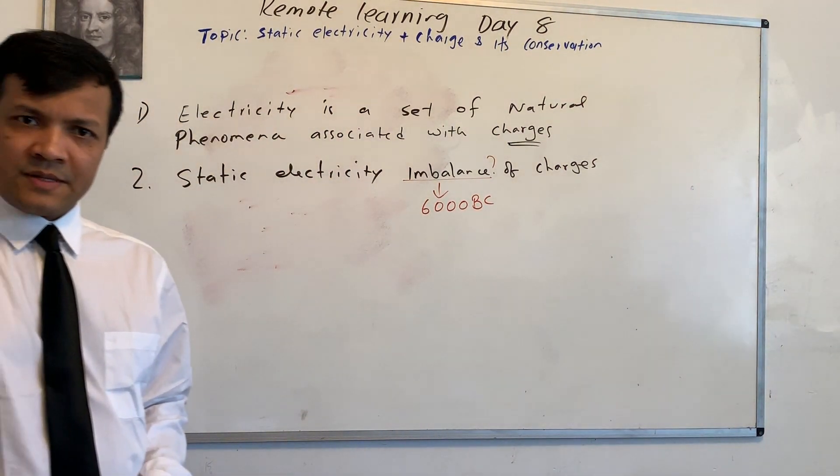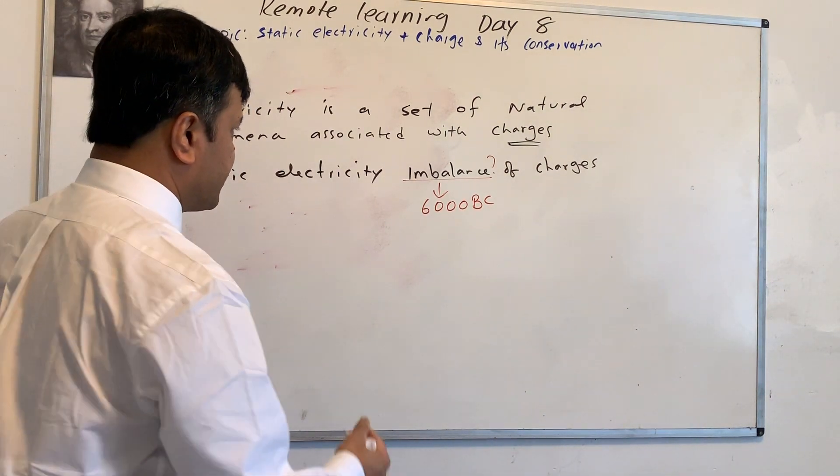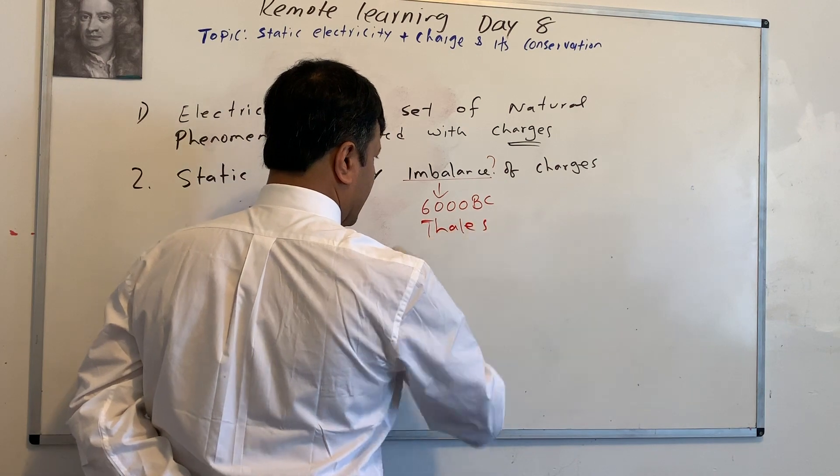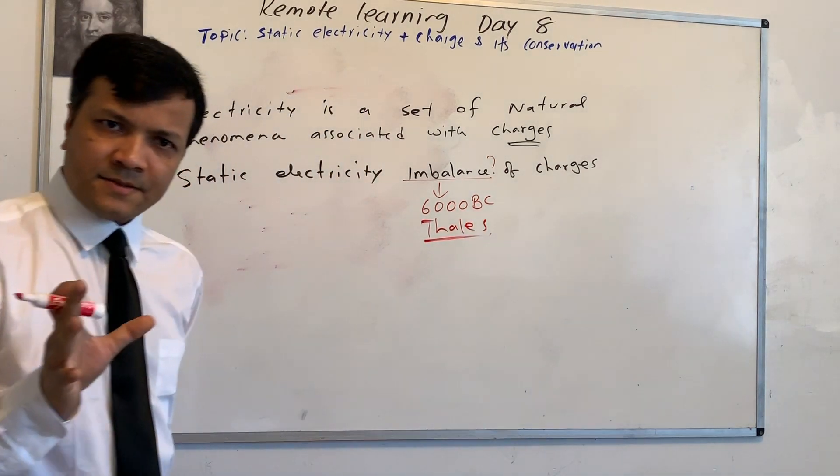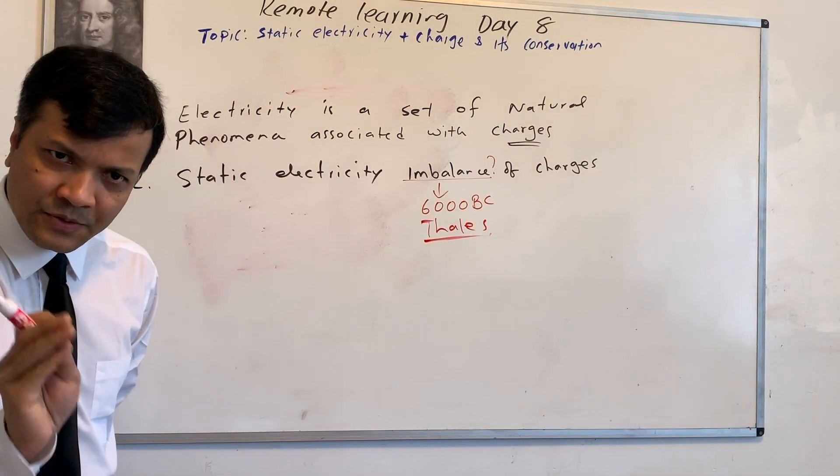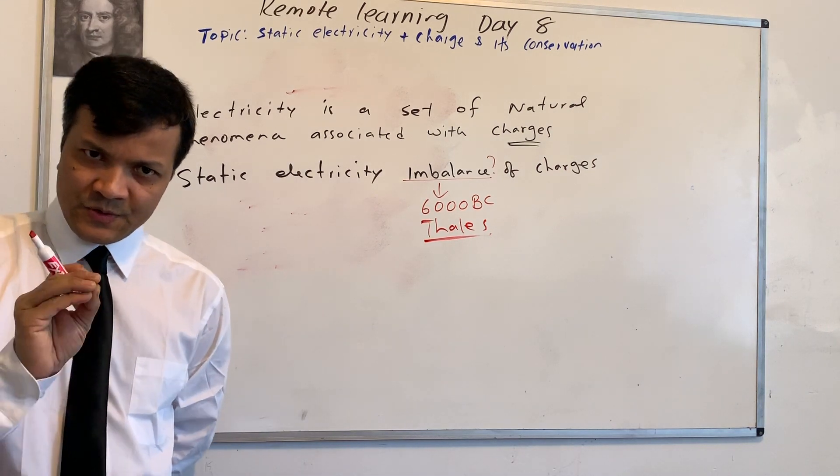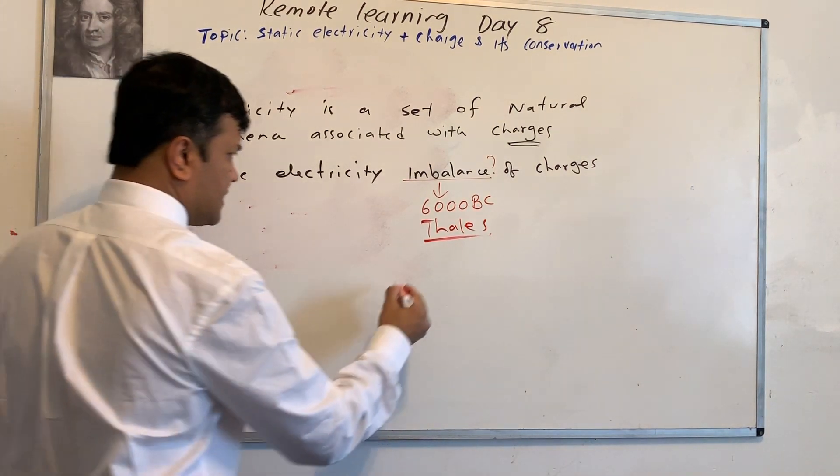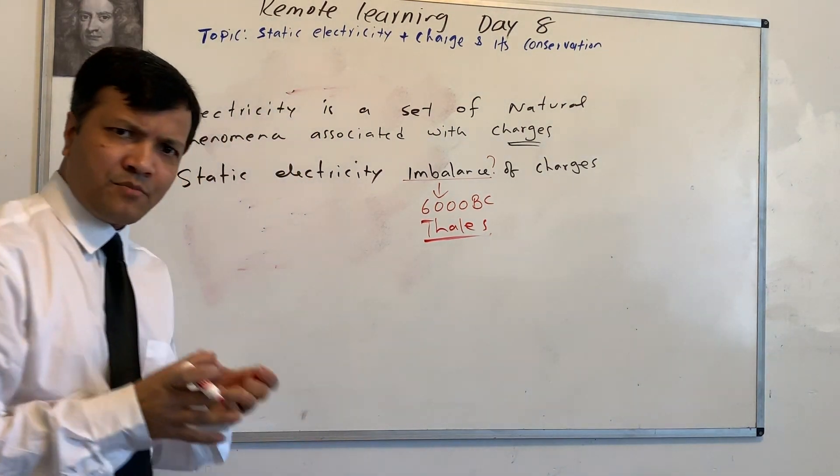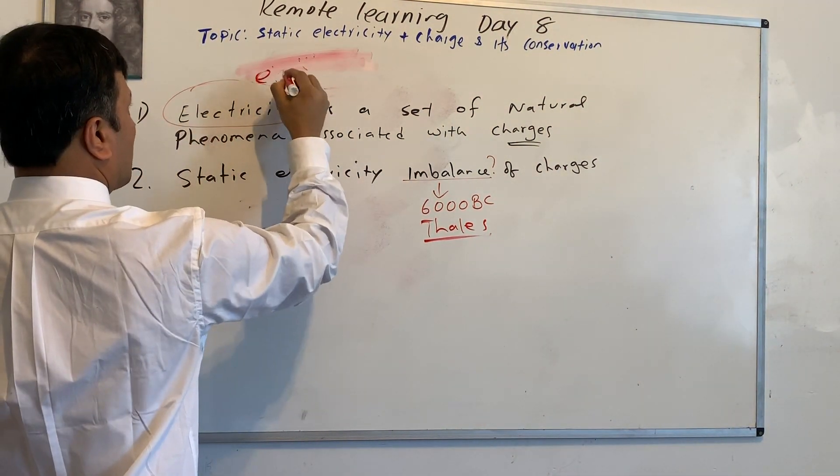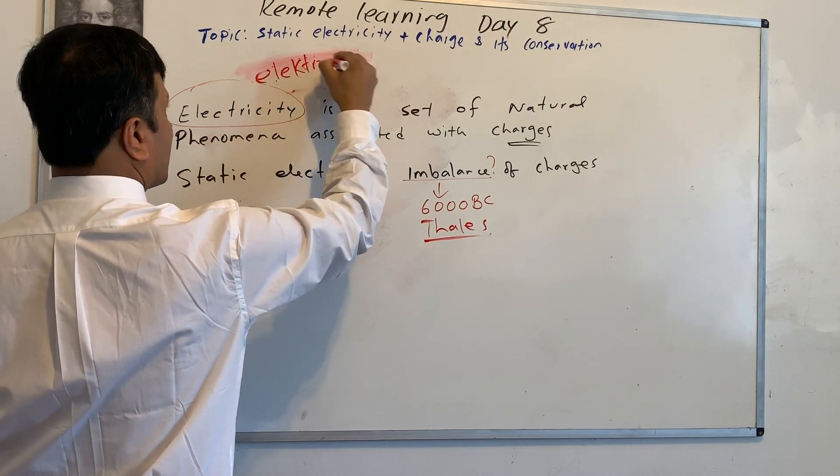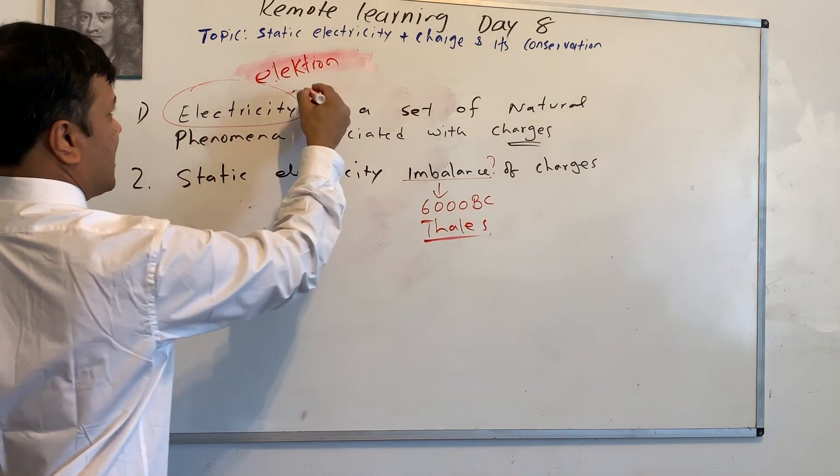Well, that takes us all the way back to 6000 B.C. We are taking you back to Thales, the time of Thales. All right, Thales knew exactly how to create the imbalance of charges. He used the amber. In fact, electricity came from the word electron. Electron means amber.